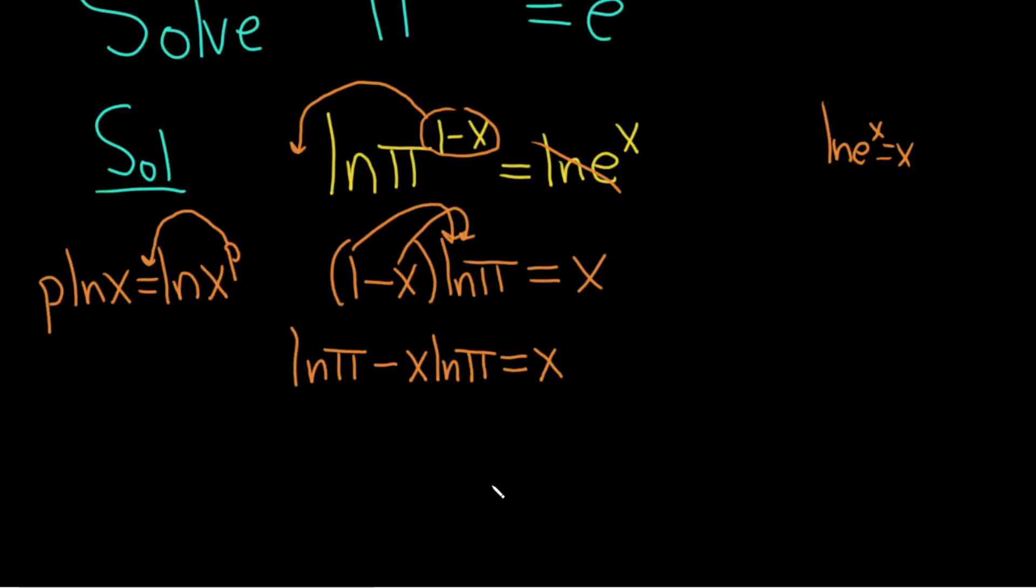We're looking for x so we should try to get all of the x's on one side by themselves. So we'll add x ln(π) to both sides. These go away. So we have ln(π) = x + x ln(π).